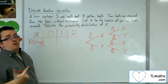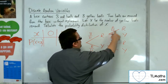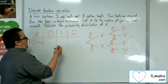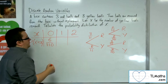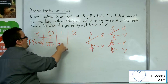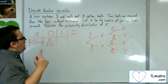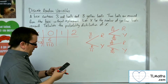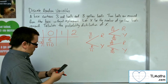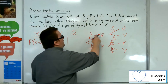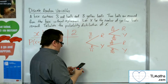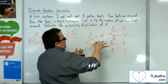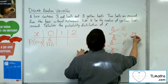The probability of picking out zero yellow balls means picking out two red balls, so that would be three over 11 times two out of 10, giving six over 110. To pick out one yellow ball, I either pick out a red first then a yellow, or a yellow first then a red. Red then yellow gives three out of 11 times eight out of 10, which is 24 out of 110.